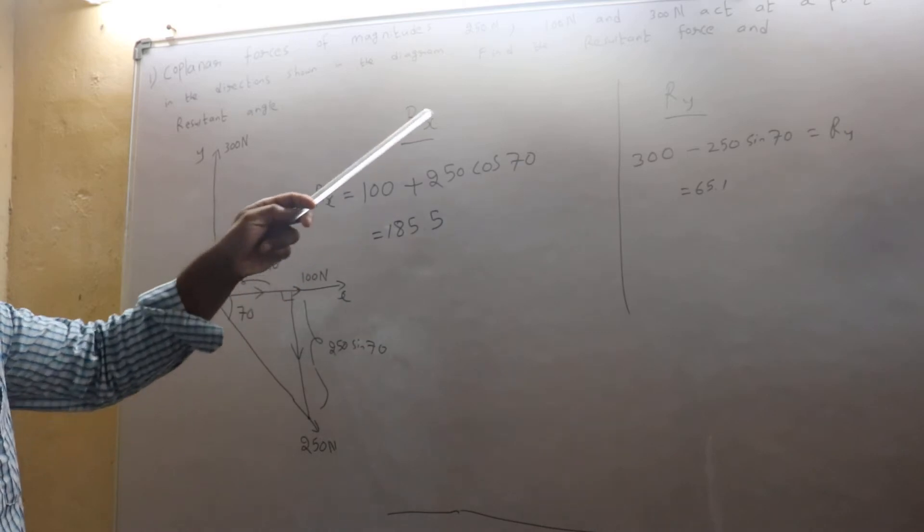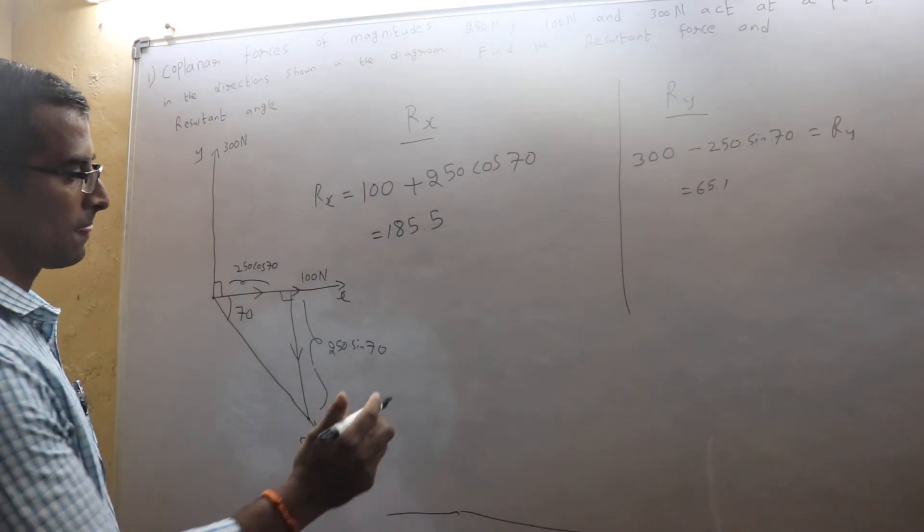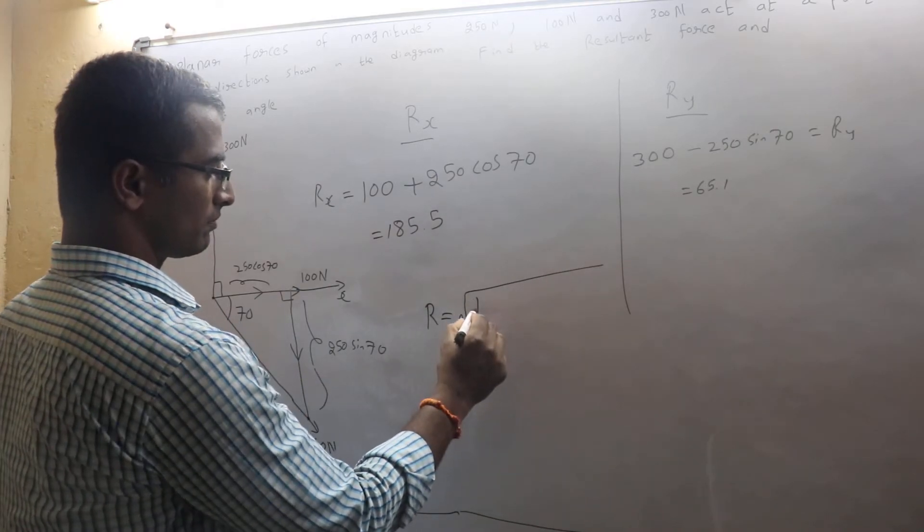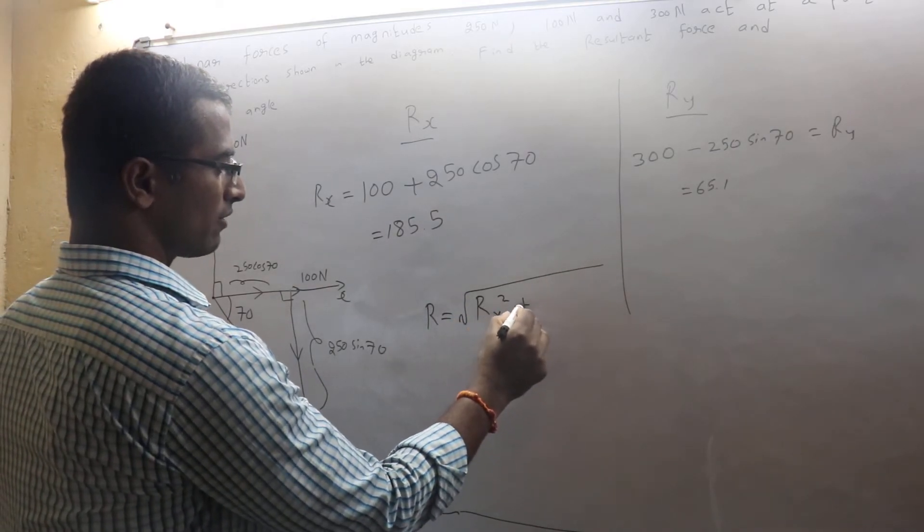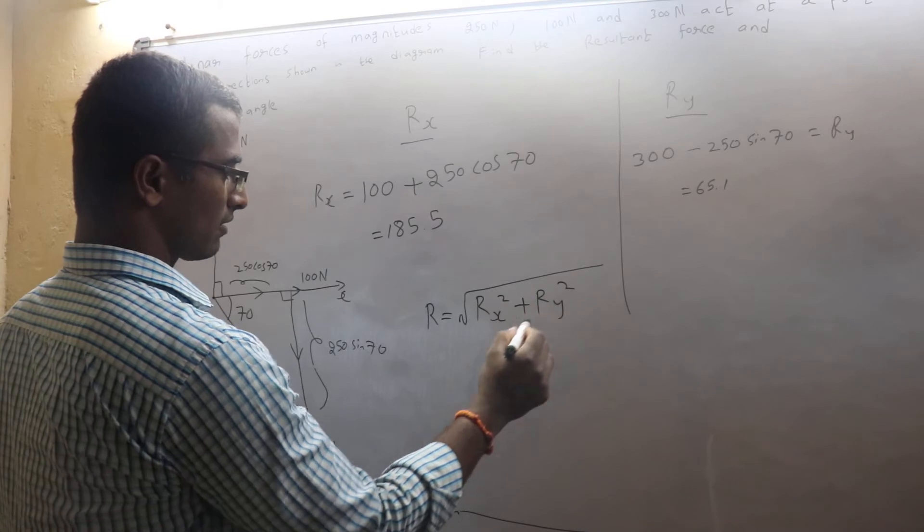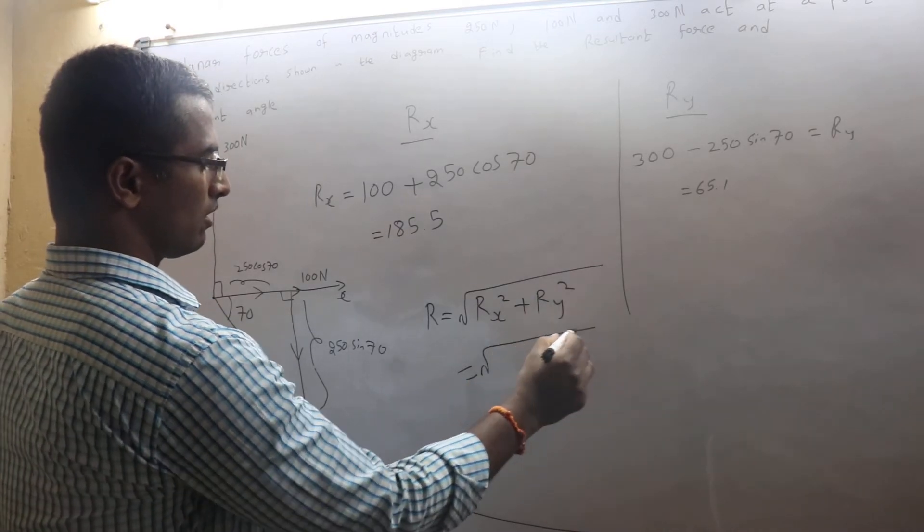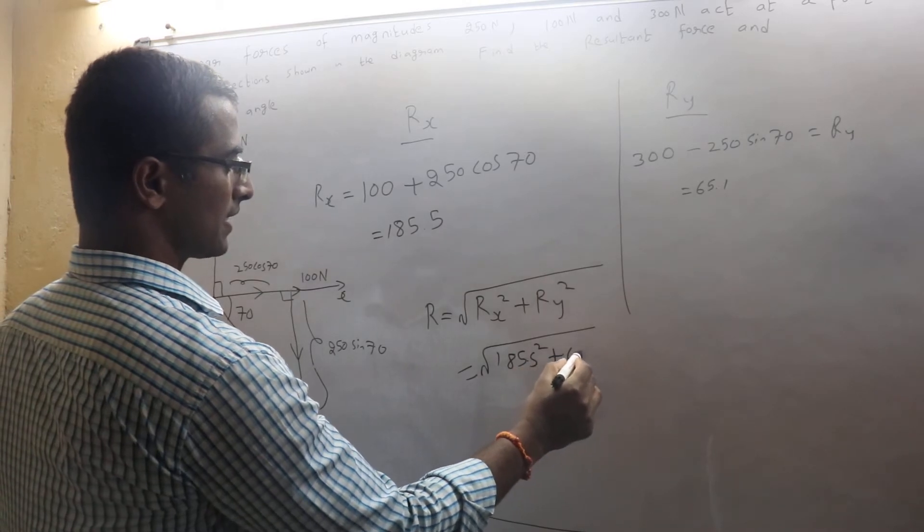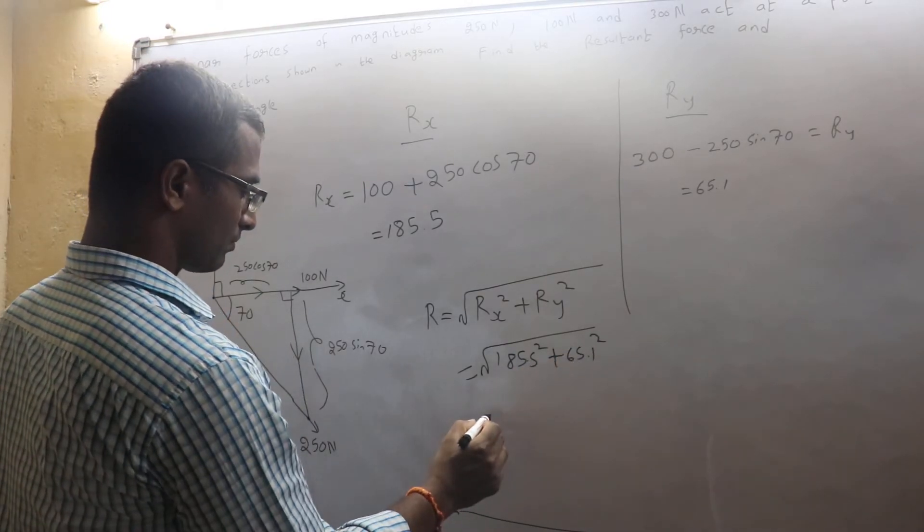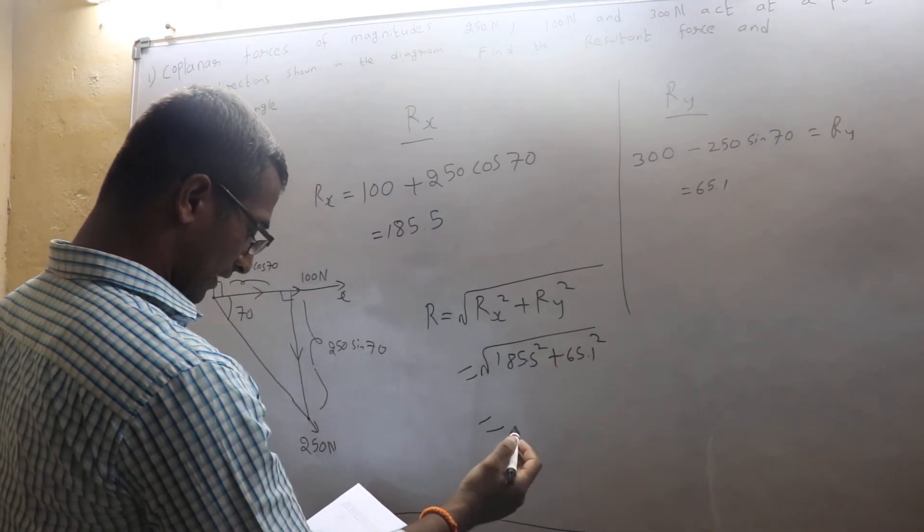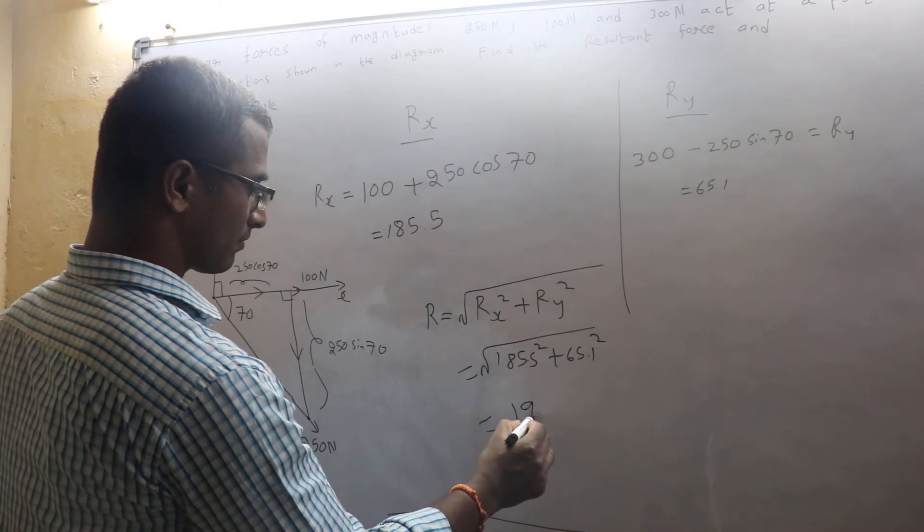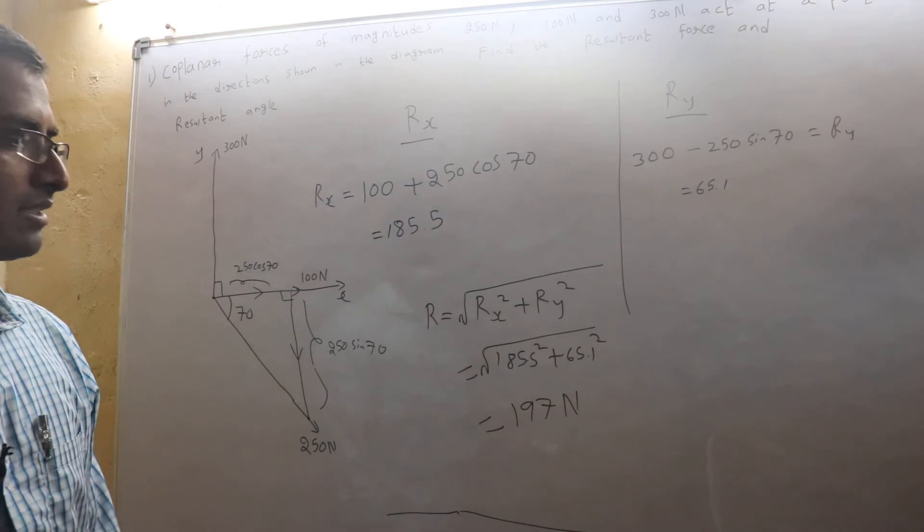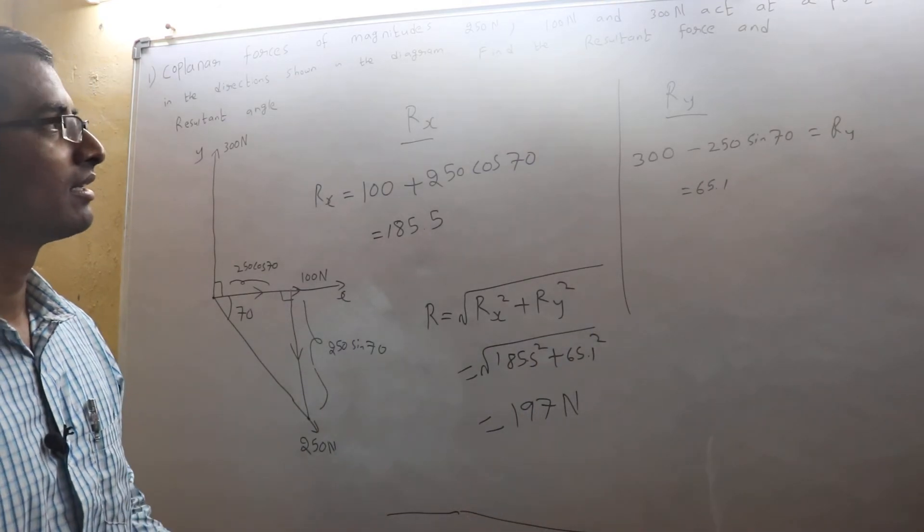Now to get the resultant force, resultant force formula is square root of Rx squared plus Ry squared. So square root of 185.5 squared plus 65.1 squared. That will give you 197. So resultant force acting is 197 newtons.